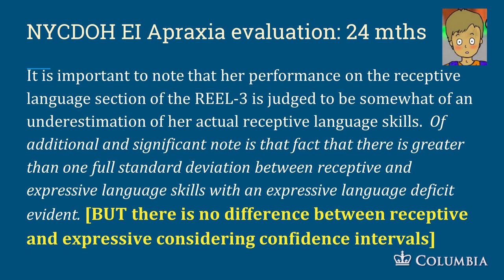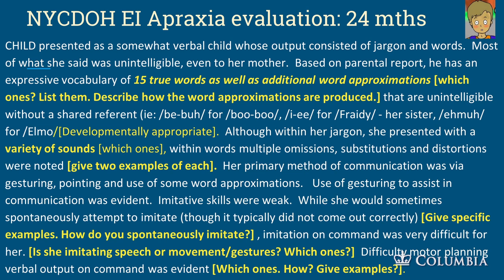Here's an apraxia evaluation of a 24-month-old. The evaluator notes her performance on the receptive section of the REEL is judged to be somewhat of an underestimation of her actual receptive language skills, and there was greater than one full standard deviation between receptive and expressive language skills with an expressive language deficit evident. The problem is if this evaluator had understood standard error of measurement in the REEL, they would see there is not one full standard deviation between the two scores — they actually overlap.